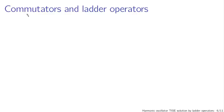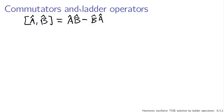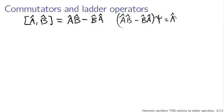The commutator of x̂ and p̂ is x̂p̂ − p̂x̂. Let's allow this to act on a wave function ψ: we get x̂(p̂ψ) − p̂(x̂ψ). The order in which operators act is important — you don't necessarily get the same answer for both of these things.